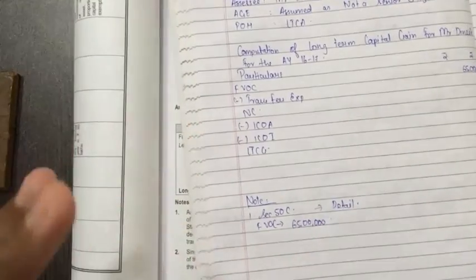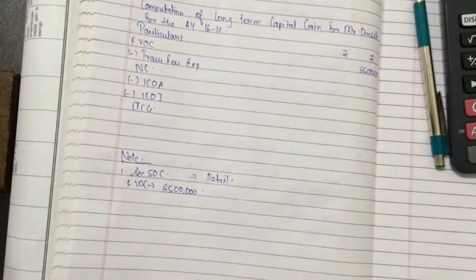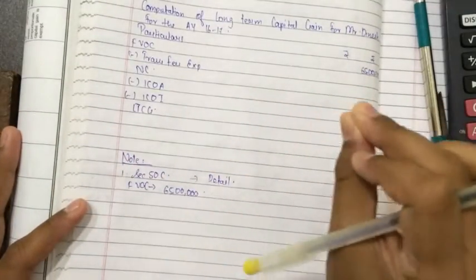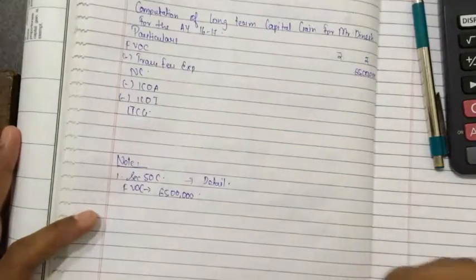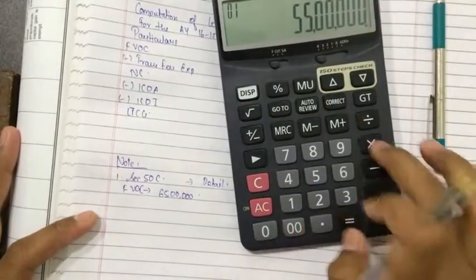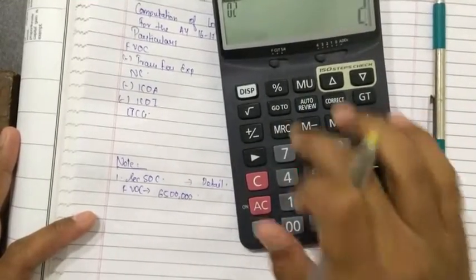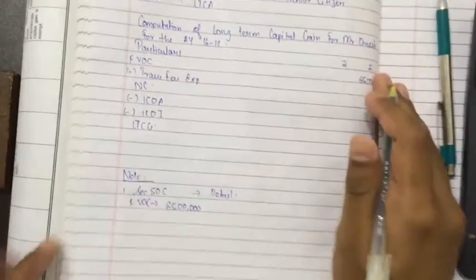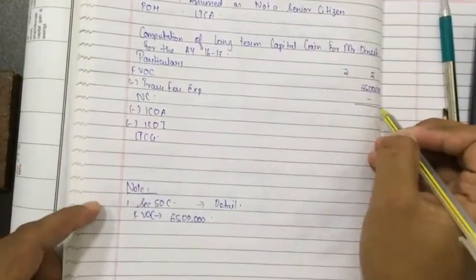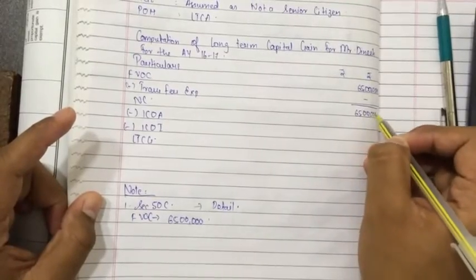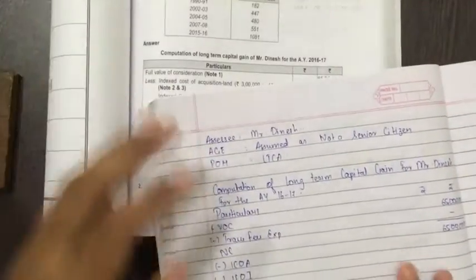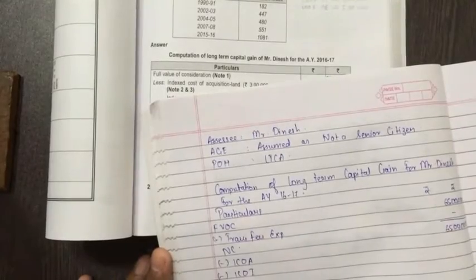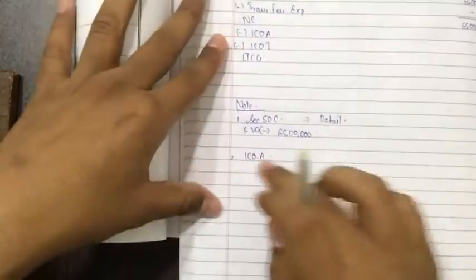If the question says, I am guiding you in advance, only if the question says transfer expenses is 2% of the selling price, purely, it is saying selling price, don't calculate 2% on FVOC. If the selling price is 55 lakhs, calculate 55 lakhs into 2%, not 65 lakhs 2%. Okay? It will come the amount of selling price into whatever the percentage it is. Transfer expenses. Is there any transfer expenses? There are no transfer expenses. 65 lakhs less, net consideration comes to 65 lakhs.